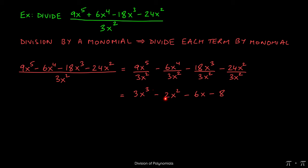Similarly, 6 over 3 is going to give us 2. x to the fourth over x squared will give an x squared.